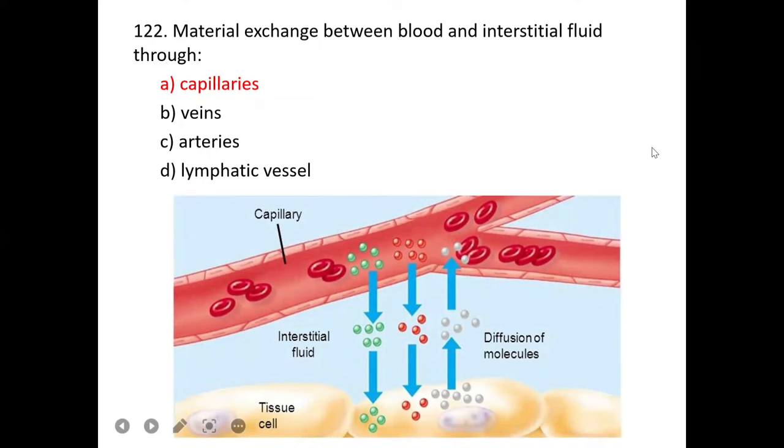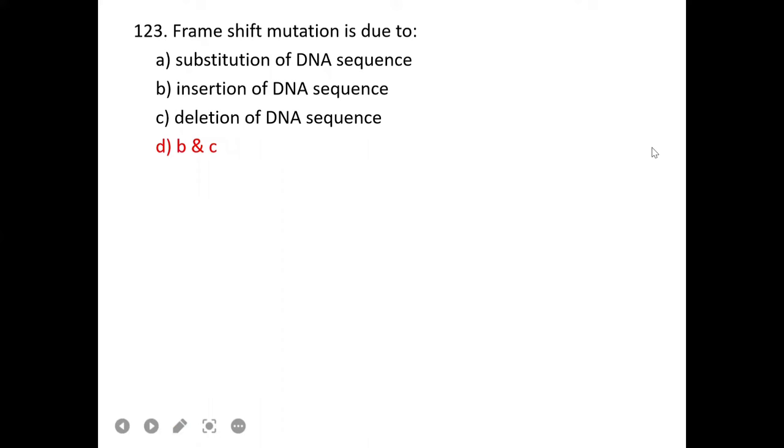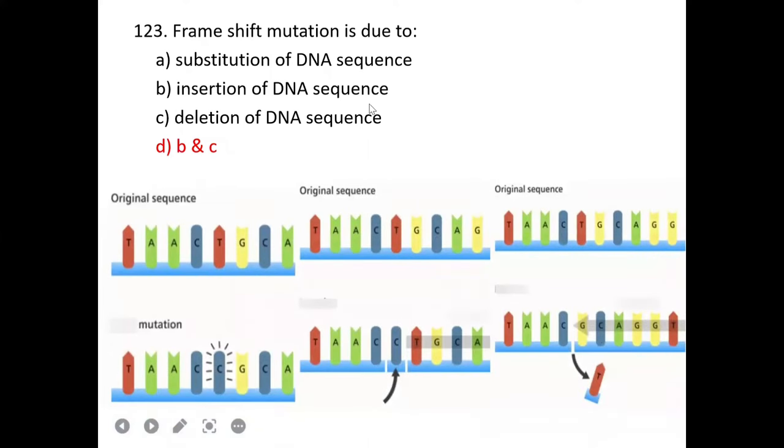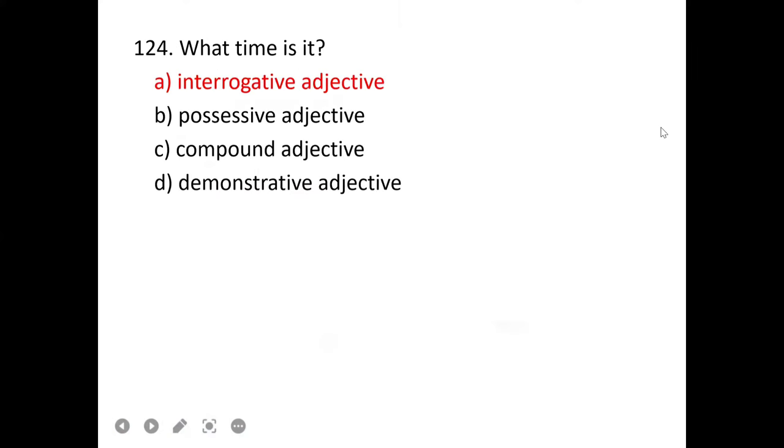Enzymes which are used to cut DNA are restriction enzymes. C is correct. Which of the following forms beads of DNA? 8-histone protein octamer, which DNA wraps around, forms a bead-like structure called nucleosome. A is correct.